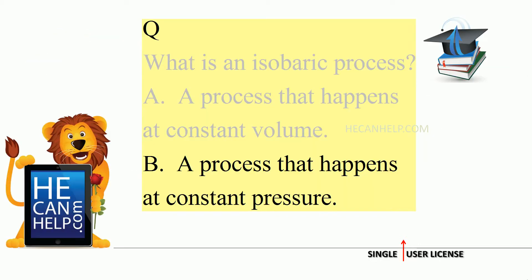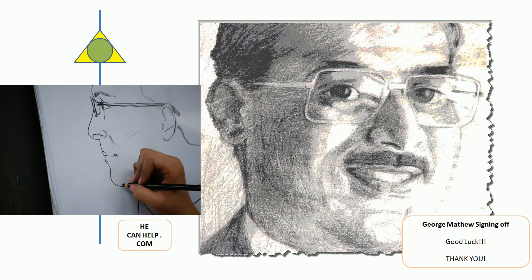What is the correct answer? An isobaric process is a process that happens at constant pressure. The answer is B. This is George Matthew standing by your side — good luck.